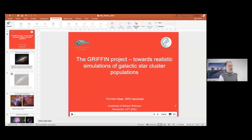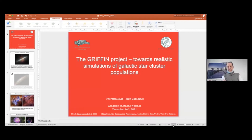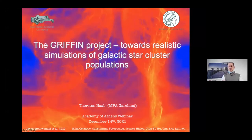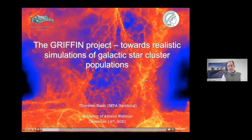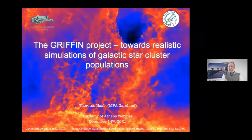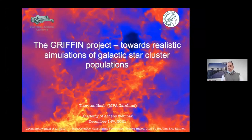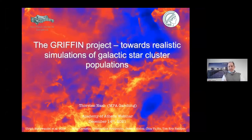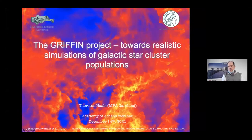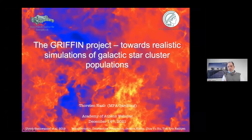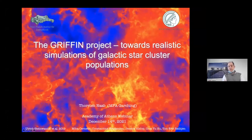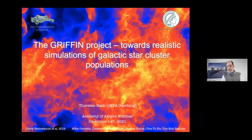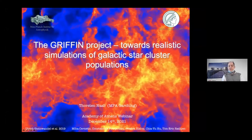Welcome everybody, both in the audience and those who joined online. It is a pleasure to have with us today Thorsten Nabb. He has come from the Max Planck Institute for Astrophysics in Garching, Munich, Germany. Thorsten finished his PhD at the Max Planck Institute for Astronomy in Heidelberg, and after being a Cambridge fellow as a postdoc, he came to MPA Garching where he leads his own research group. He works in computational astrophysics, N-body simulation, star formation, and all that nice stuff.